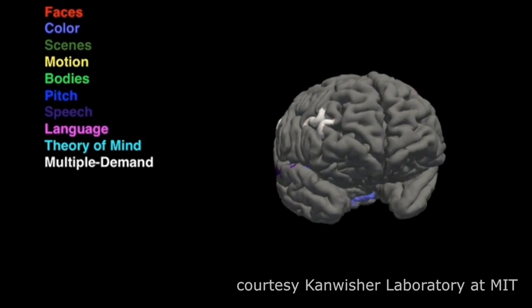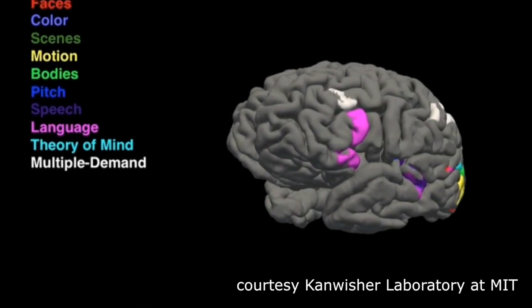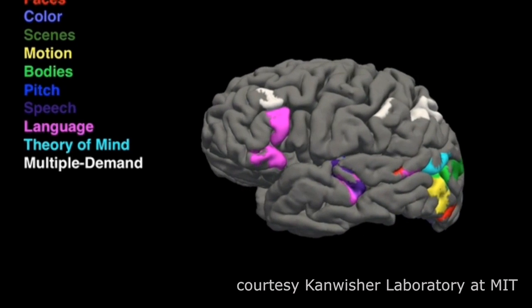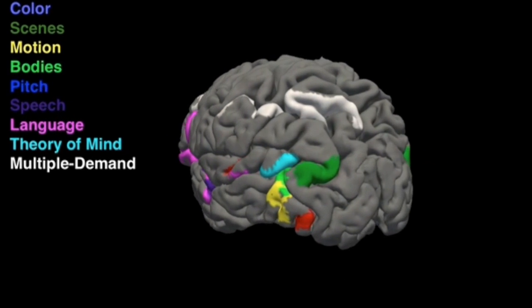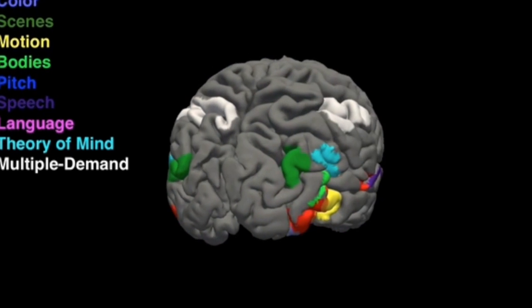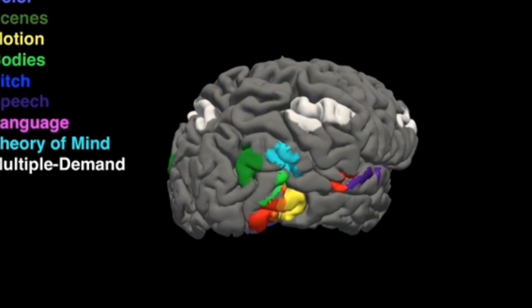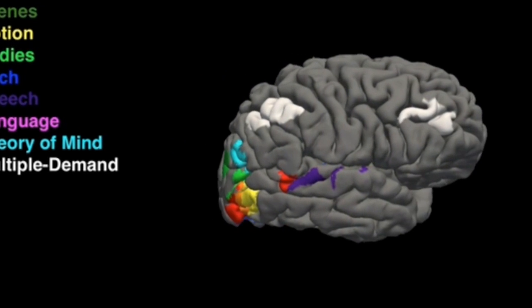Over the past 20 years, we've really taken off in trying to understand what brain regions and what parts of the brain respond to and process different mental functions. By creating a map of how these regions connect with other brain regions, I can then have an understanding of what connections are needed for what a brain region processes.